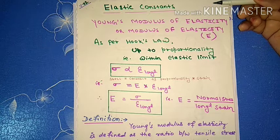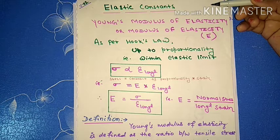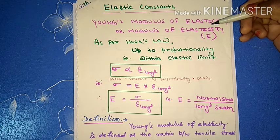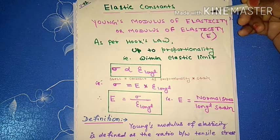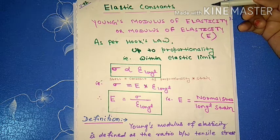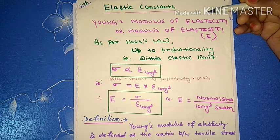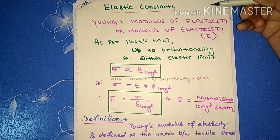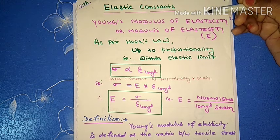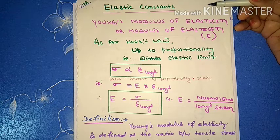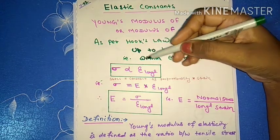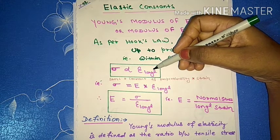Young's modulus of elasticity, or modulus of elasticity, is denoted by E. As per Hooke's law, when a material is loaded within elastic limit, stress is directly proportional to longitudinal strain.